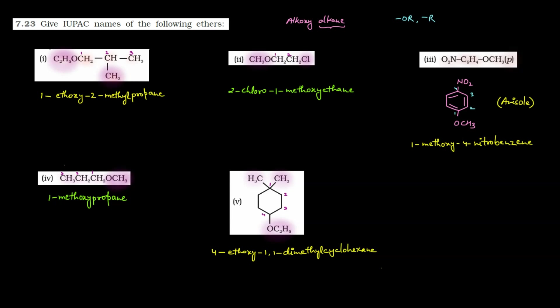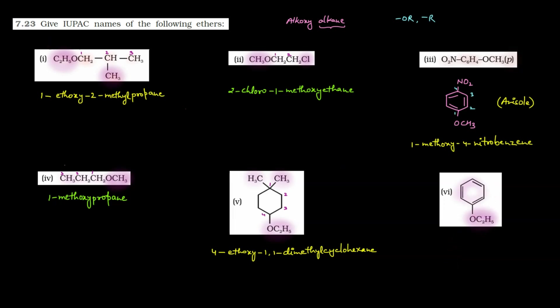Ab hum dekhte hain is question ka last part. Yahan diya hua hai ek benzene ring aur benzene ring par laga hai OC2H5. Yeh toh bahut hi simple hai — parent chain benzene ring hogi aur substituent hoga OC2H5, yani ethoxy. Toh iska naam aasaani se: ethoxybenzene. Clear? Toh yeh kuch questions given the jinke IUPAC names likhne the — bahut simple questions, bas basic concepts clear hone chahiye. Milte hain next question mein, bye bye.